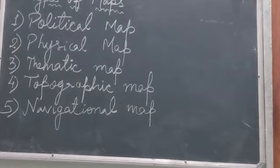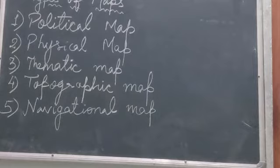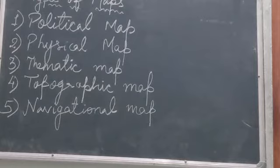First, we will talk about political map. What is a political map? A political map tells us about state boundaries, capitals, capital cities and districts. The map which contains information about the boundaries of countries, states, capital cities and districts is a political map.